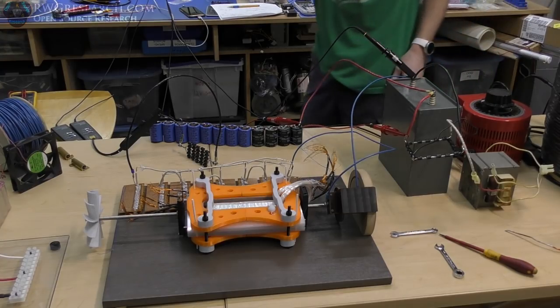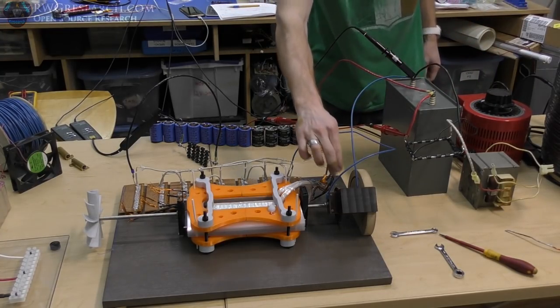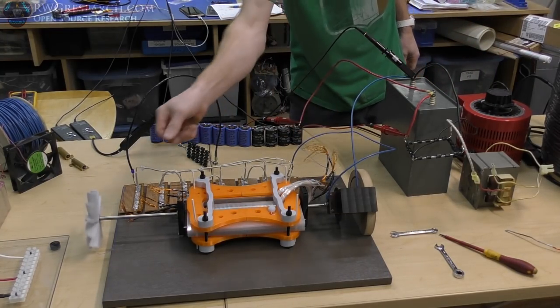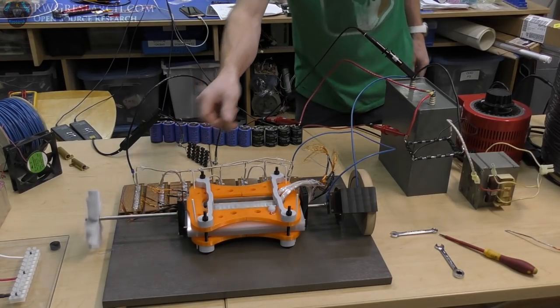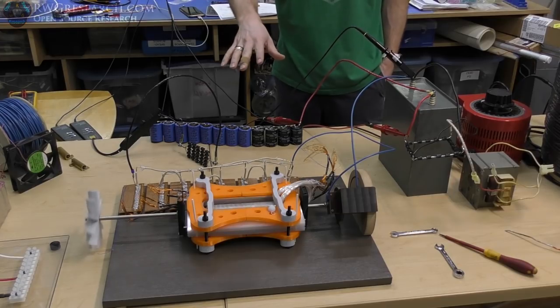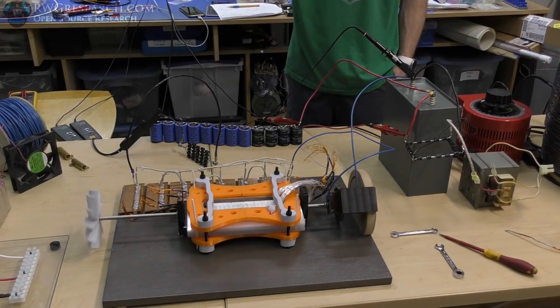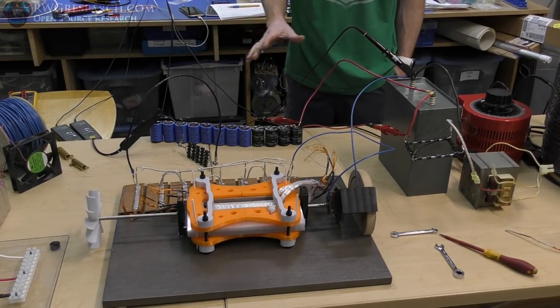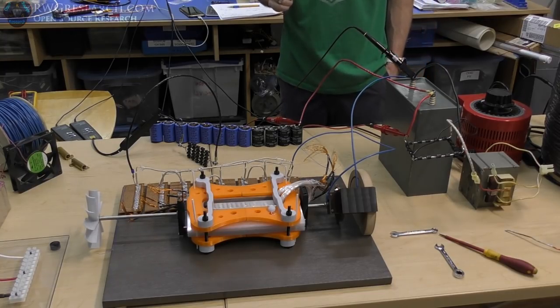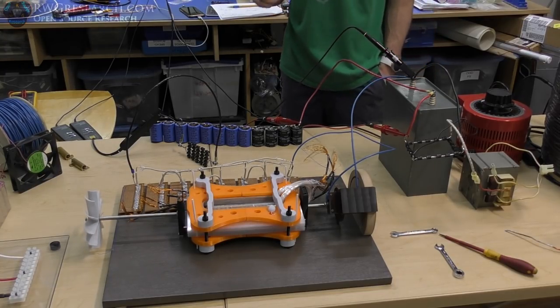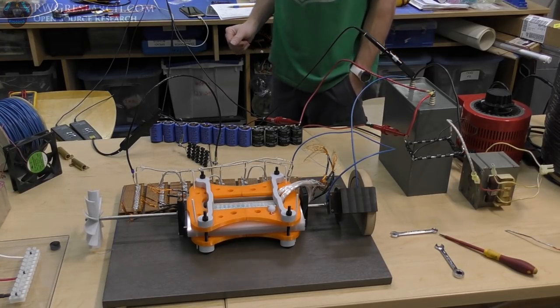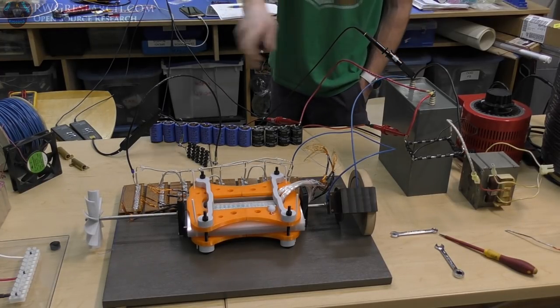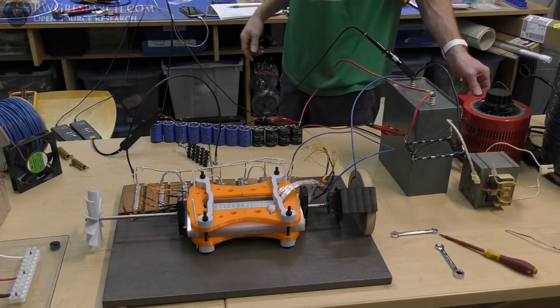First test, we're going to do low voltage. We got a spark gap set up right here, it's adjustable. I'll show you that in a minute. We got the cheesy fan, we got a bunch of other stuff, but for this first test I just want to see if like a 500 volt charge in this capacitor will fire this in the proper direction. If it doesn't, we're going to switch some wires around. Let's just see what happens.